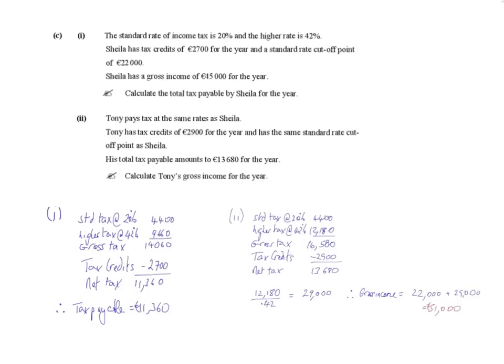Okay, so let's have a quick read of this. The standard rate of income tax is 20% and the higher rate is 42%. Sheila has tax credits of €2,700 for the year and a standard rate cutoff point of €22,000. She also has a gross income of €45,000 for the year. Calculate the total tax payable by Sheila for the year.